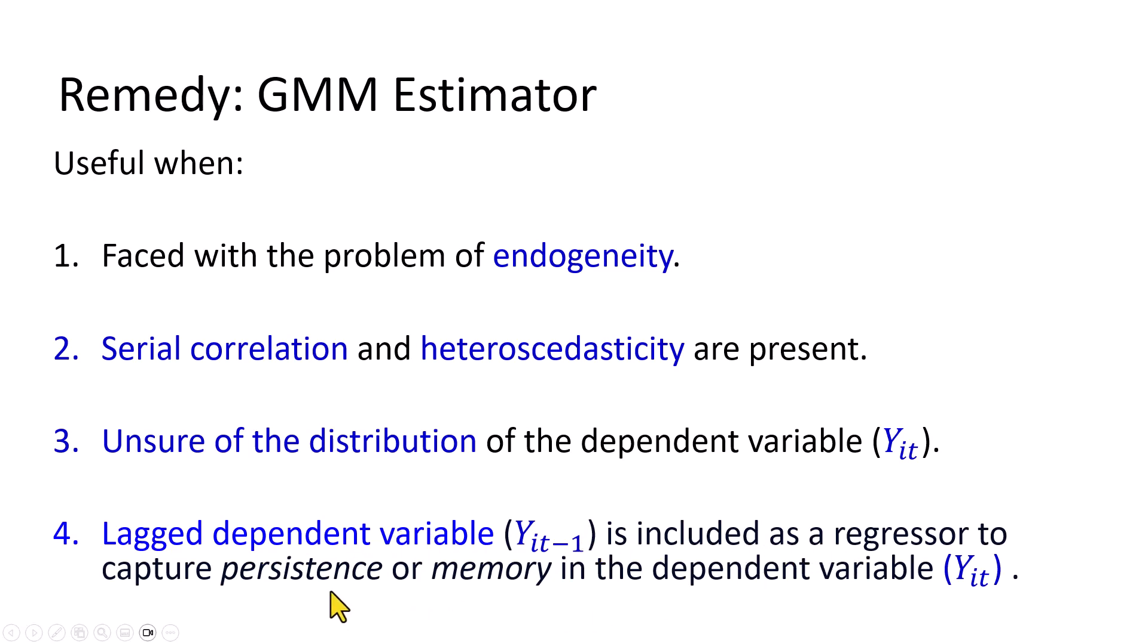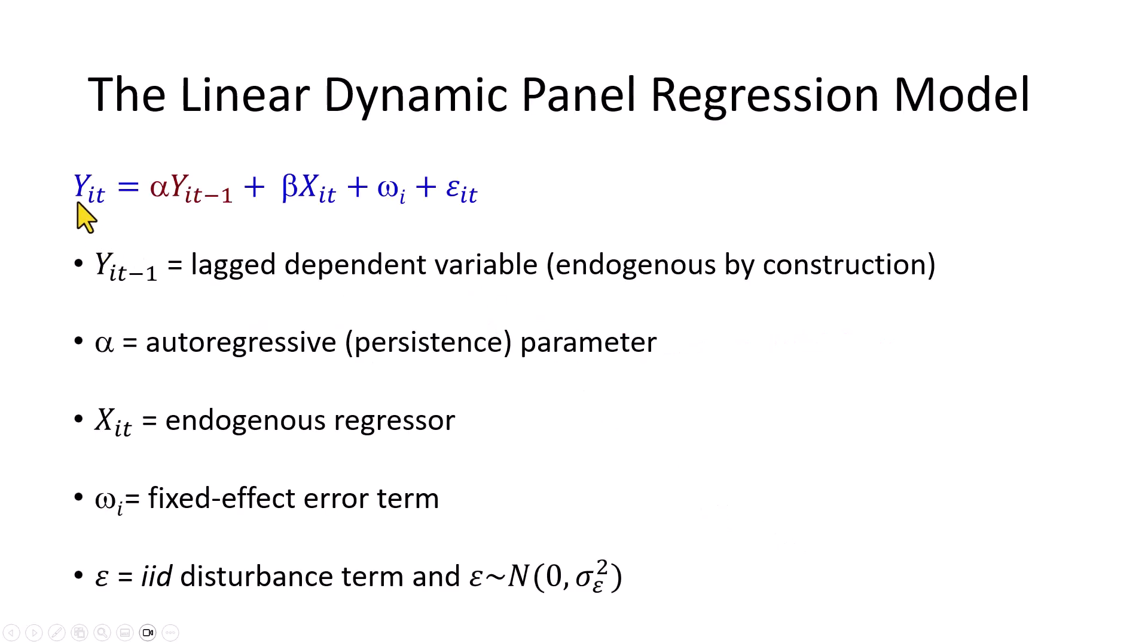And why do we do this? To capture persistence or memory in the dependent variable. So here, I present the two-variable linear dynamic panel regression model, where the lag-dependent variable is included as a regressor. The coefficient of which is the autoregressive AR(1) parameter that captures persistence in the model. The value of which is between zero and one.